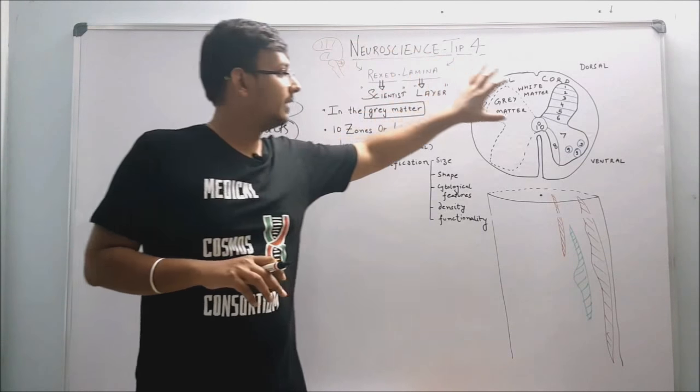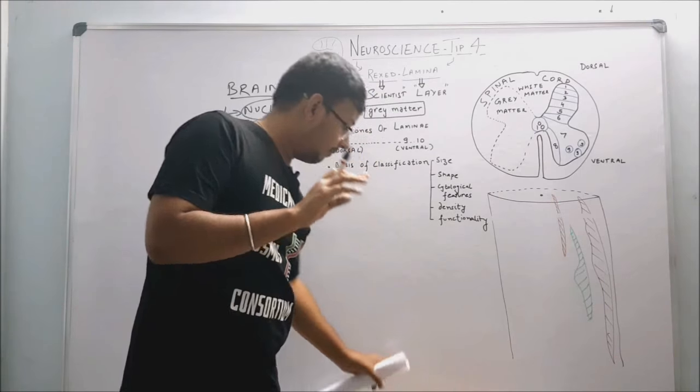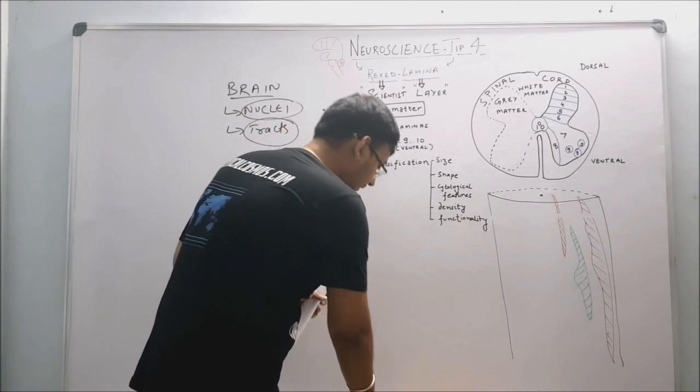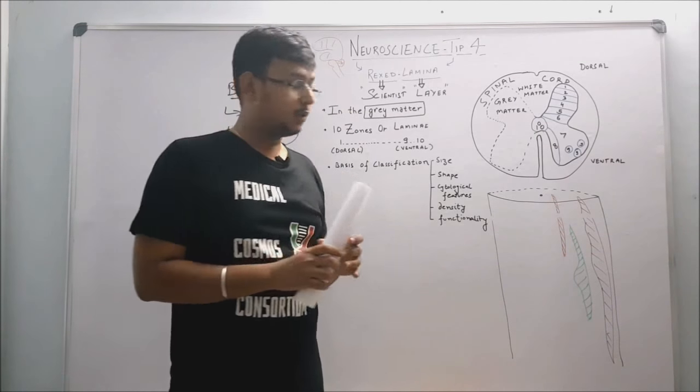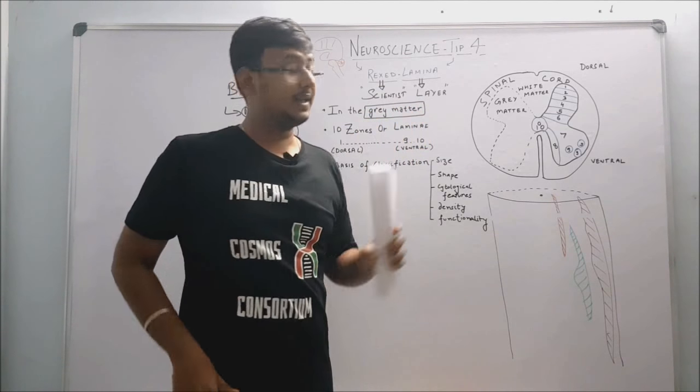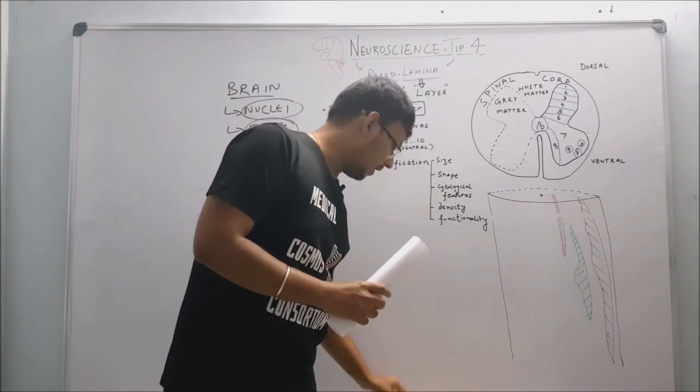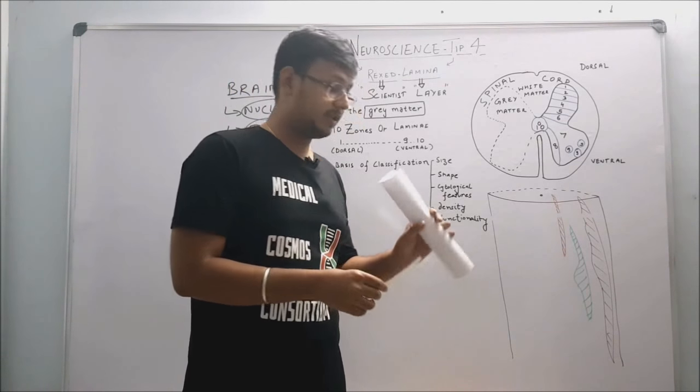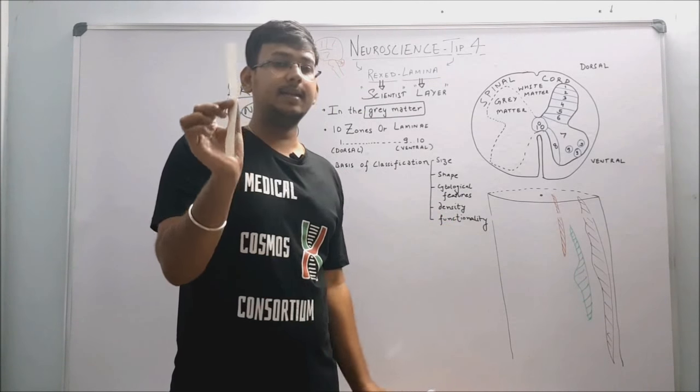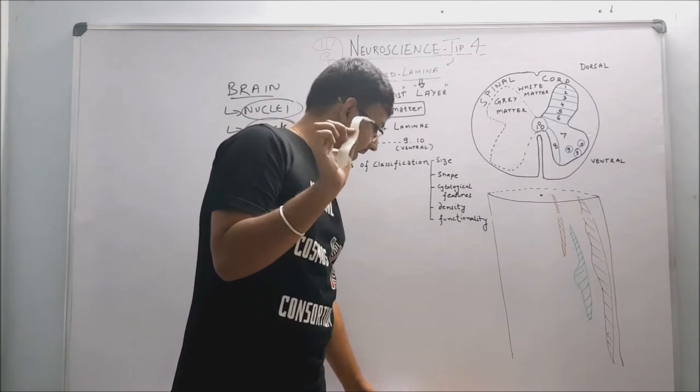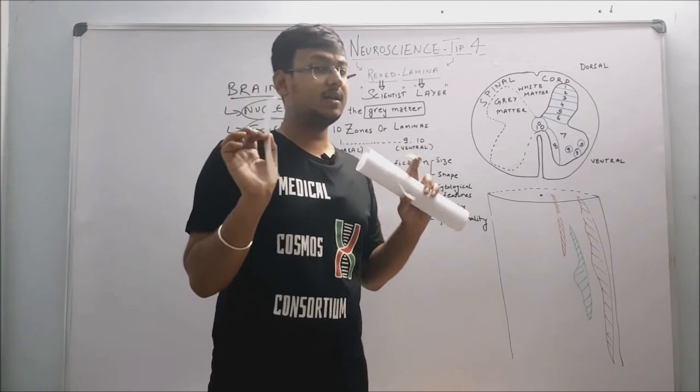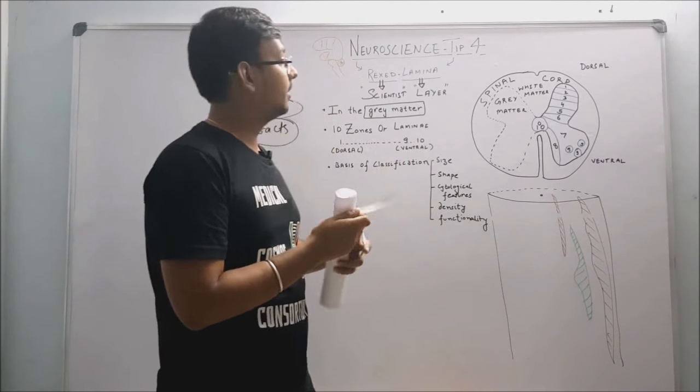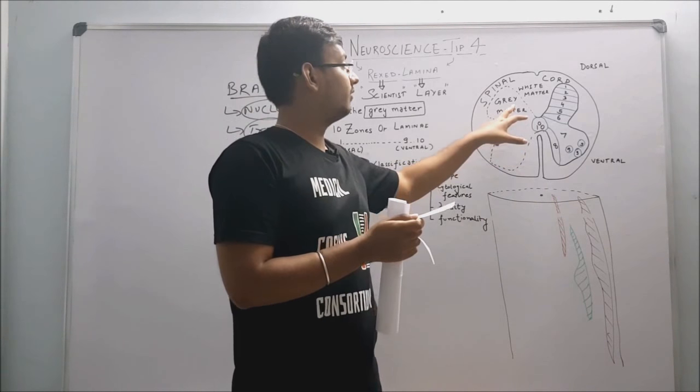Before this, I want to give a 3D perspective to this Rexed lamina anatomy. For example, we have this spinal cord - cross section of spinal cord - and this is a lamina, and this is another lamina. We are discussing inside the gray matter. Remember, the gray matter of spinal cord lies inside and white matter lies outside.